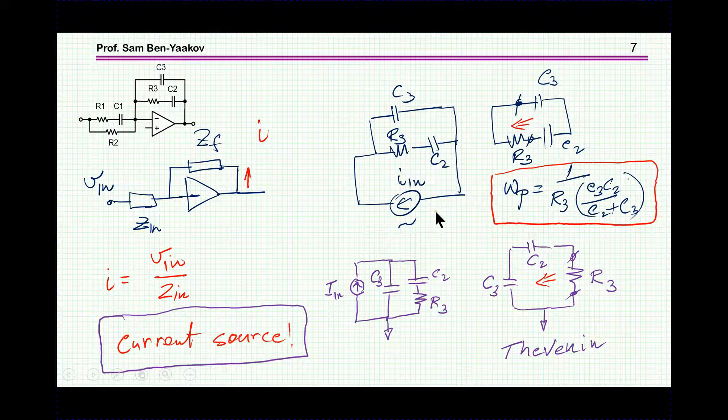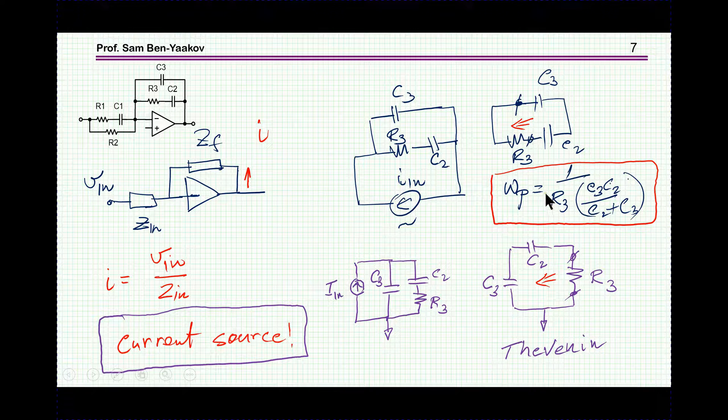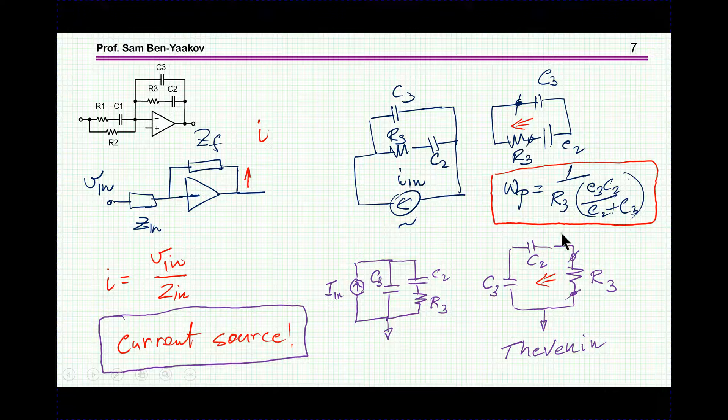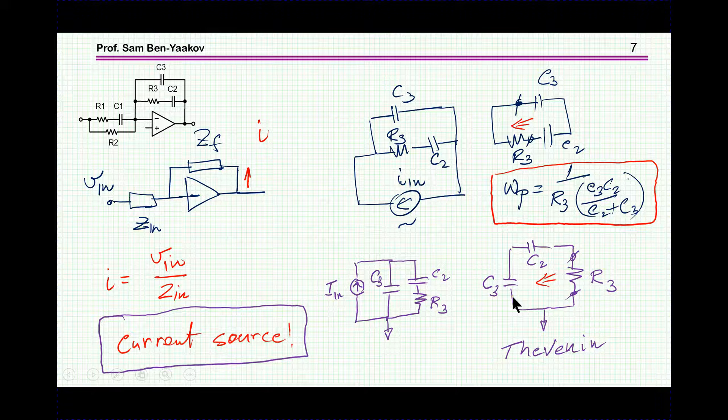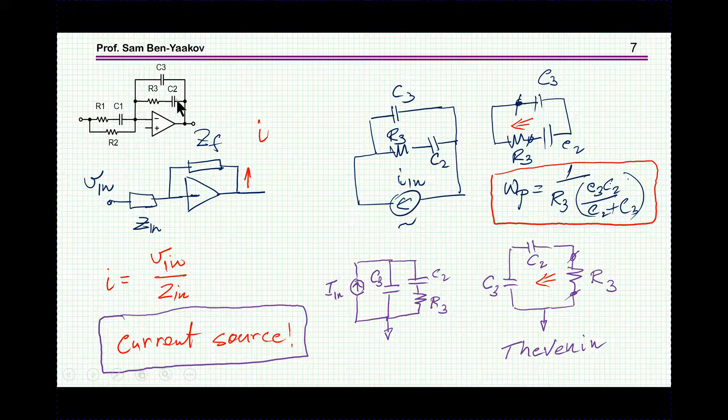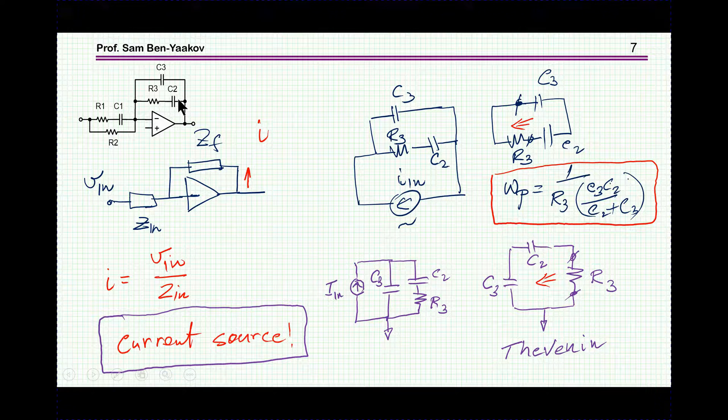Now, using Thevenin, disconnecting the source, in this case, I'm looking at these two capacitors as one capacitor and looking back, then obviously the RC time constant, or the pole, is one over R, and these two in series. Or, if you wish, you can separate the resistor here, look back, and you see again, two capacitors. So, indeed, in this particular case, because the ZF is fed by a current source, you do see these two capacitors in series. Amazing.